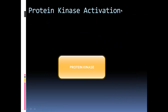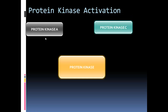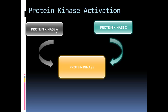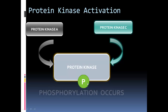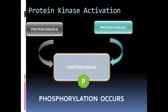For protein kinase activation: protein kinase A and protein kinase C each bind to protein kinase. This causes the arrival of the phosphate group, leading to phosphorylation. In summary, both protein kinase A and protein kinase C lead to the phosphorylation of protein kinase.